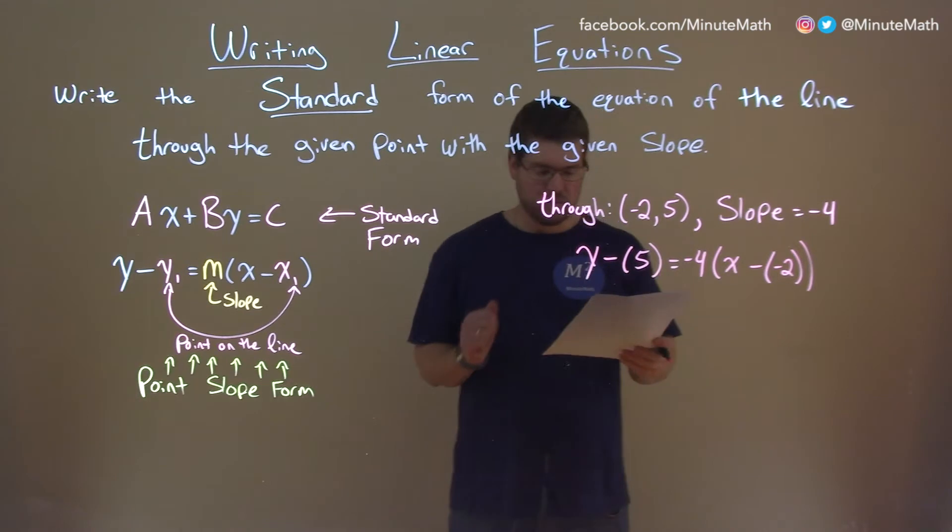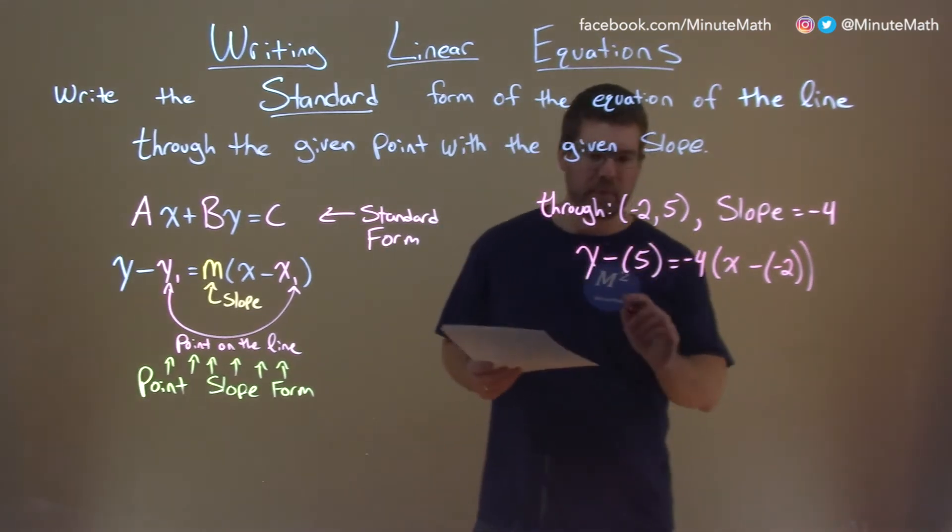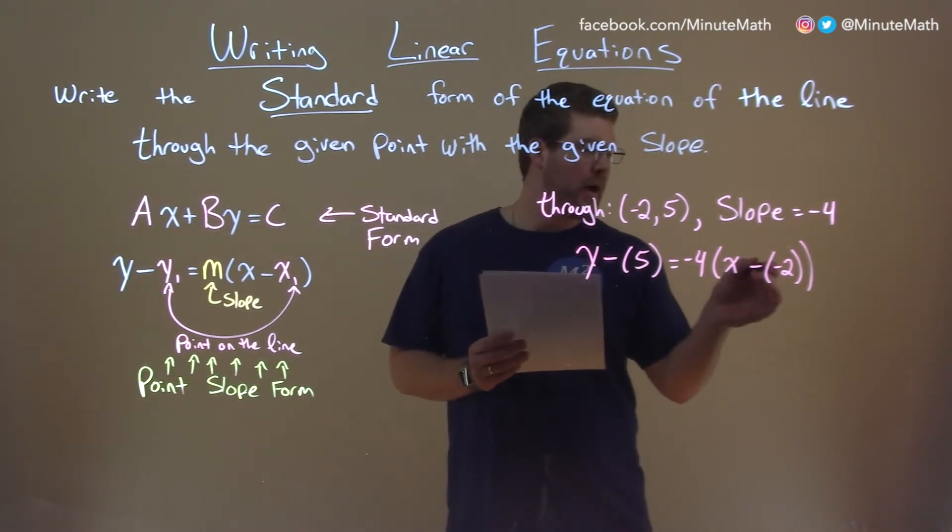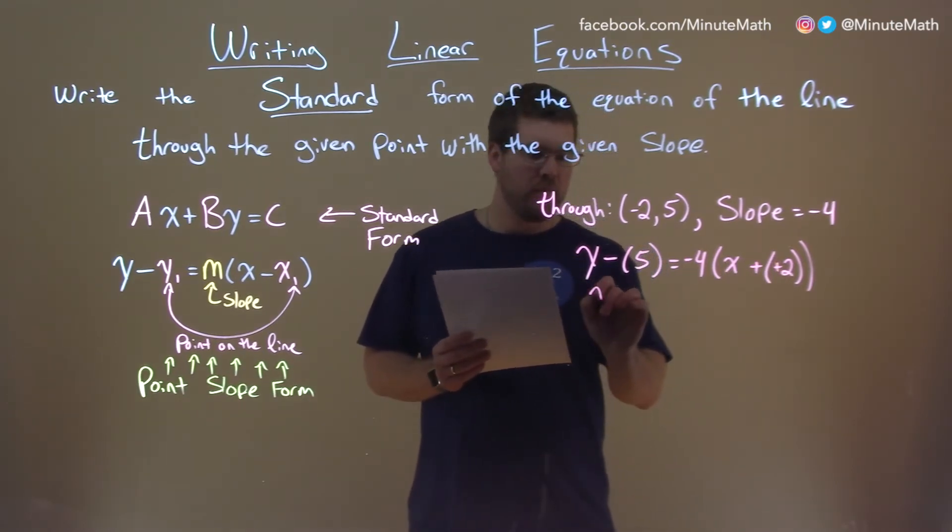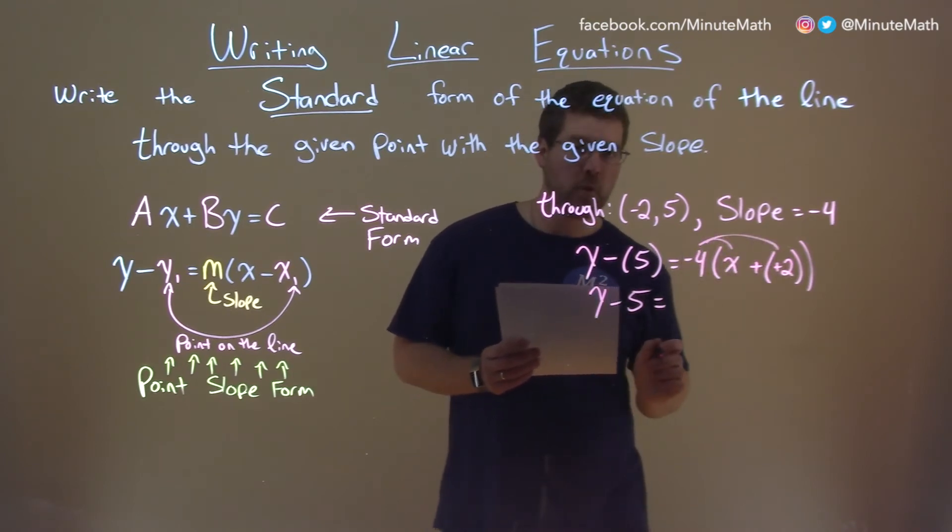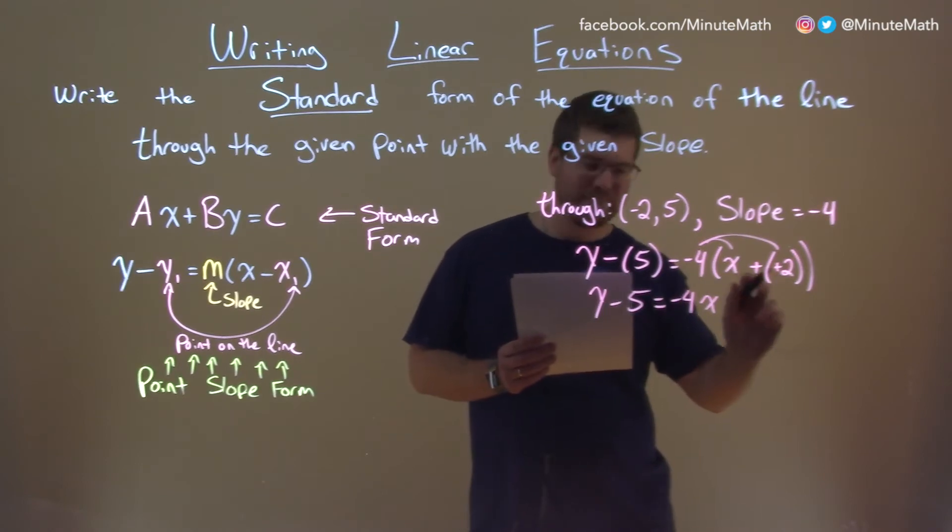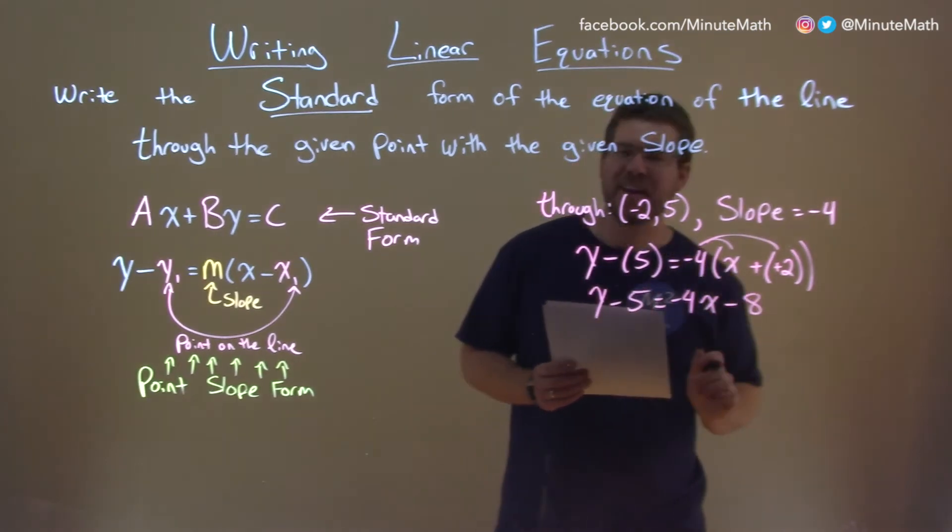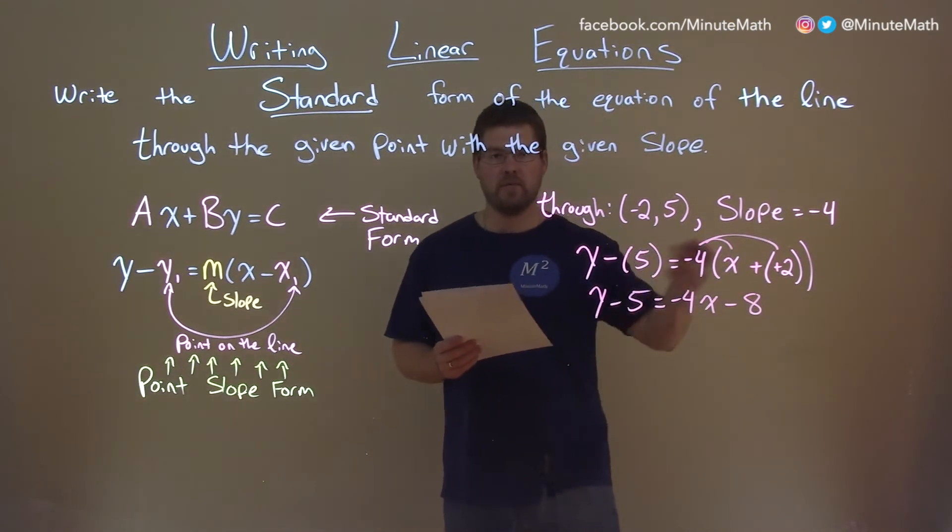And now we want to simplify as much as we can. First thing I note here, this minus a negative is like plus a positive, so I'm going to do that there. So we have y minus 5 equals distribute the minus 4 to both parts: negative 4x, and negative 4 times a positive 2 is negative 8.